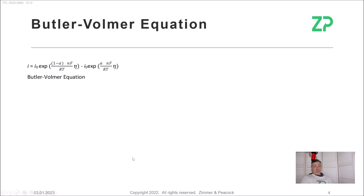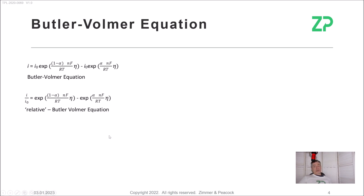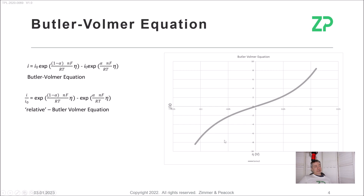The full Butler-Volmer equation has two parts: the anodic current and the cathodic current. Plotting that out, it shows how current changes when I apply a positive overpotential — that's an oxidation or anodic current — and also shows the current when I apply a negative overpotential, giving a cathodic or reduction current. That's how the full Butler-Volmer equation actually looks.